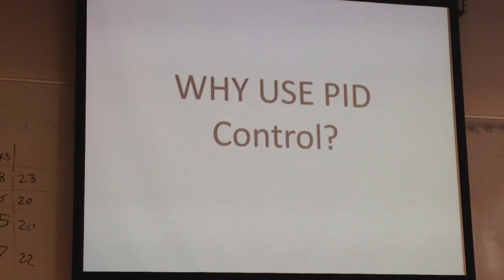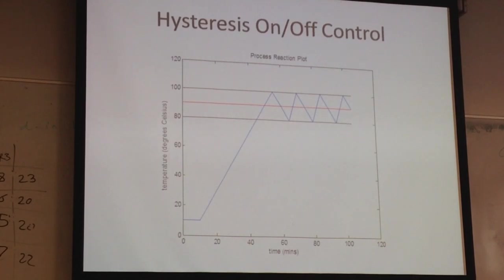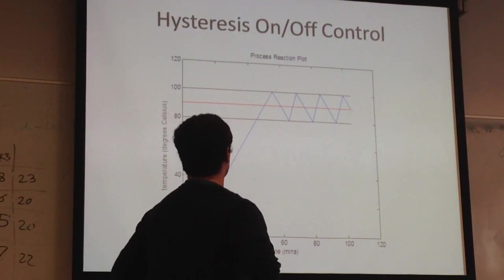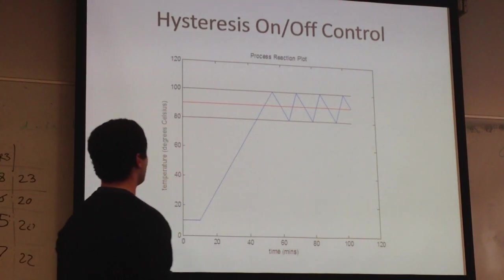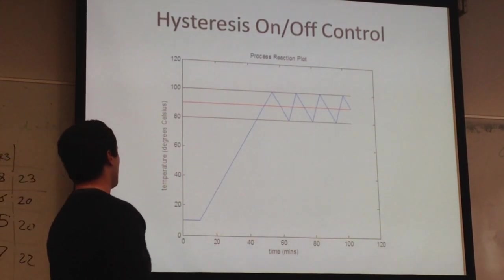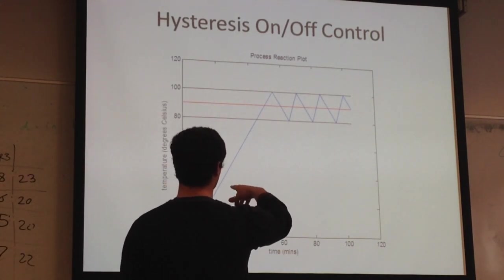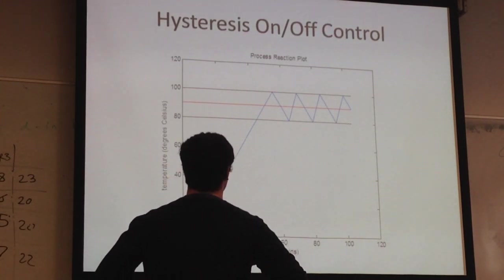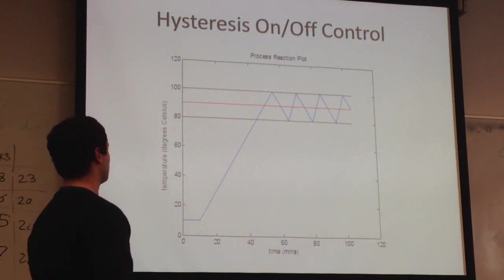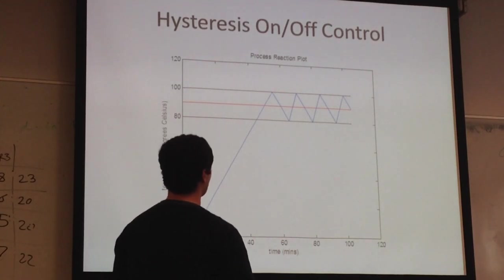So why use PID control? This plot here shows you, it could be any kind of process, it's controlled with hysteresis. So it's on/off controlled. And you can see in this case, it's continuously oscillating. I should say, first of all, the set point is red, at 90 degrees. So that's what you want it. The process is actually continuously oscillating between 80 degrees and 100 degrees.